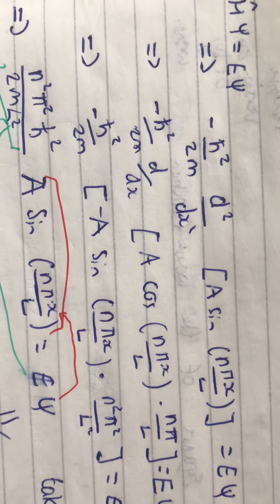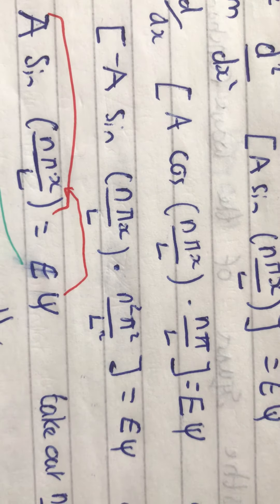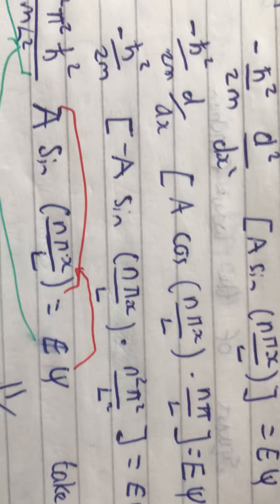So, the terms that we've got, if we take our nπ, n squared π squared L squared out, we get n squared π squared,